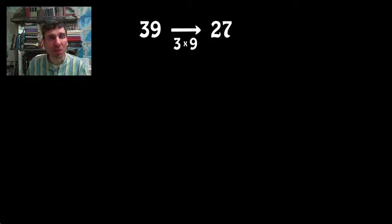Take that number, multiply its digits together. 2 times 7, that's 14. Take that number, multiply its digits together. 1 times 4, that's 4.